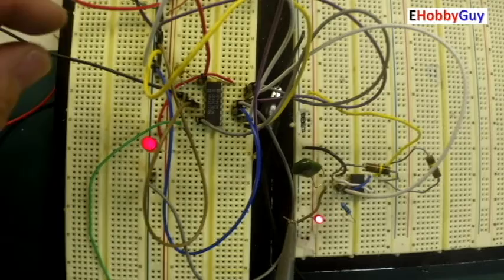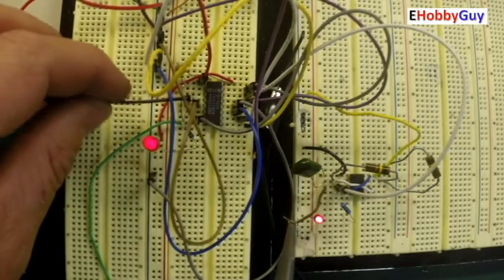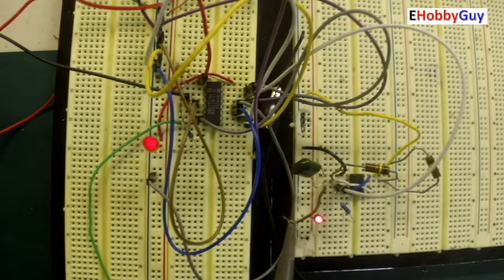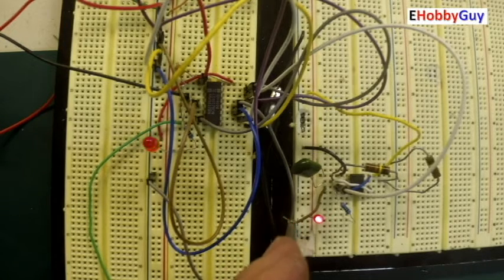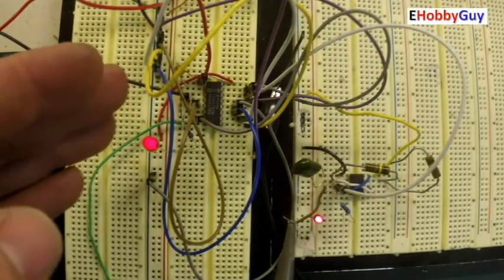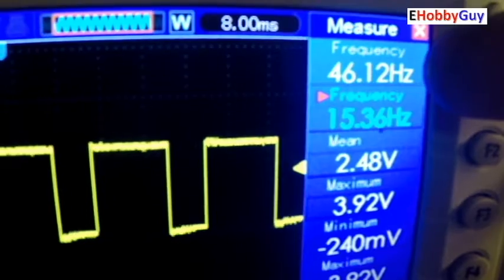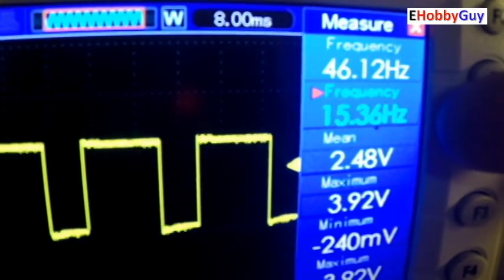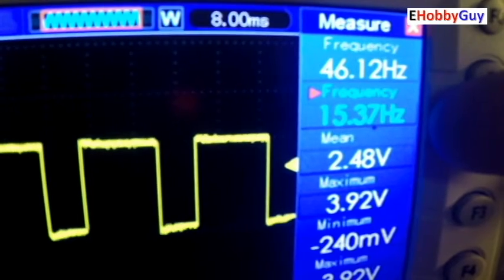The output of the 4017 chip here is tied into my scope, and so we'll look closely at the input coming from the astable circuit and the output coming from the 4017 chip. We have a 46.12 hertz input and a 15.37 hertz output.